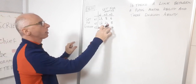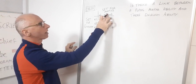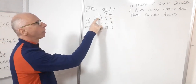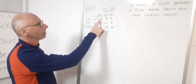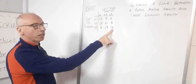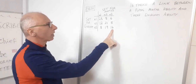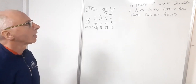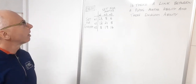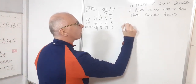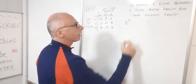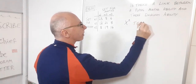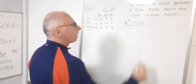For example, this 21 means there are 21 students in the second set for maths and the second set for English. This one here means there are 23 students in the top set for maths and top set for English. And this one here is the opposite — 14 students in the bottom set for maths and also the bottom set for English. So we want to find out if there's any link, and the way we're going to do that is with the chi-squared test.